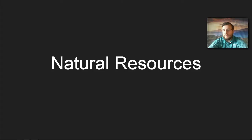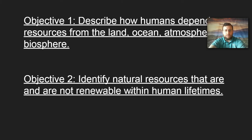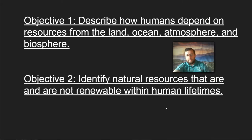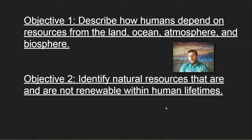I do have a different set of videos where I go over each of these things in more detail, but this is meant as a review video for someone that's really close to passing a test or just needs a little bit more information. The first two objectives we've covered together because they kind of go hand in hand: what are the resources that we get from the land, the ocean, the atmosphere, and the biosphere, and which ones are renewable or not renewable in the sense that they cannot be replenished in an amount of time that a human society needs.